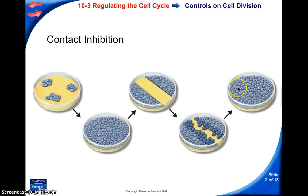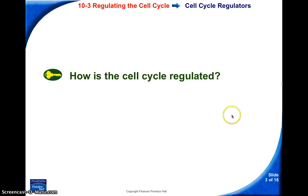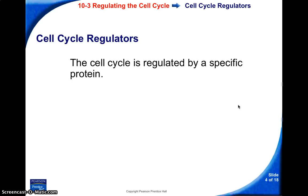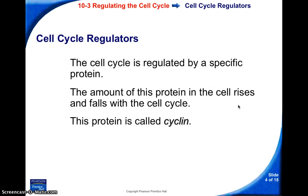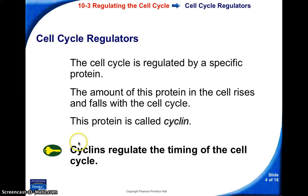And so once again we end up with one full layer of cells. What this shows is that we can turn on and turn off cell division. So basically, how is the cell cycle regulated? It's regulated by proteins. A particular protein called a cyclin rises and falls as we go through cell division, and these cyclins regulate or control the timing of the cell cycle.